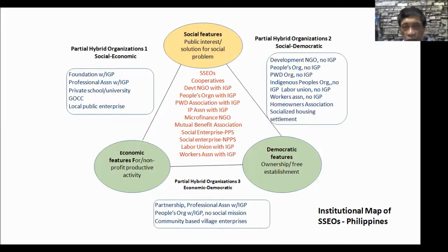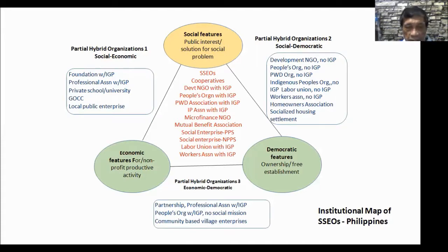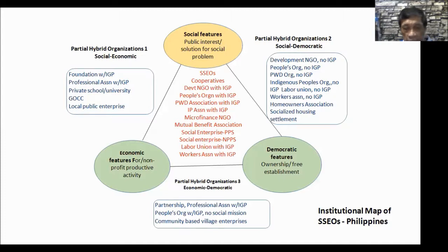On the right side are social-democratic organizations — not engaged in any economic activity, but having a social mission and more democratic governance. The third type is economic-democratic: they have income-generating projects and democratic organization, but no social mission. This may involve partnerships, professional associations with IGP, people's organizations with no social mission, and community-based village enterprises engaged in business but without a social mission.